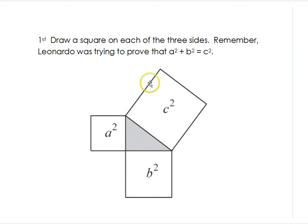The first thing he did was to draw a square adjacent to each side of the triangle. So we have a², b², and c². We're trying to prove that this area plus this area equals this area.